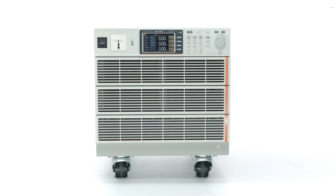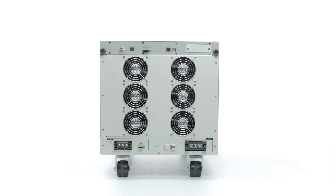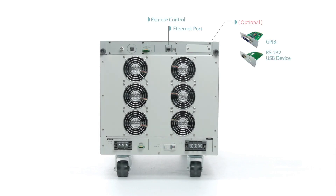Users can conveniently augment the output voltage from 0 volts to 600 volts RMS and output frequency from 45 Hz to 999.9 Hz by purchasing options without sending equipment back to GW INSTEK.